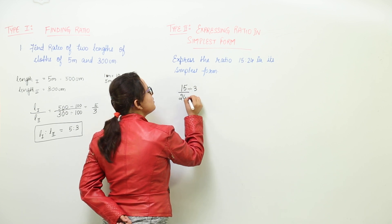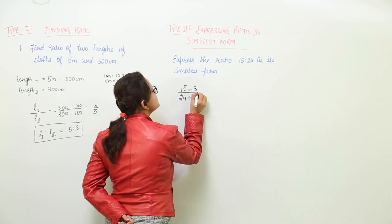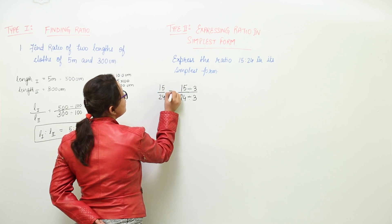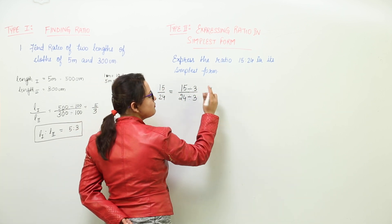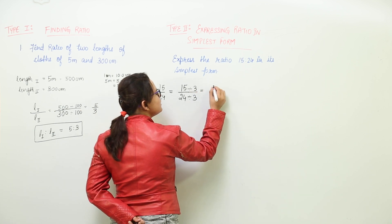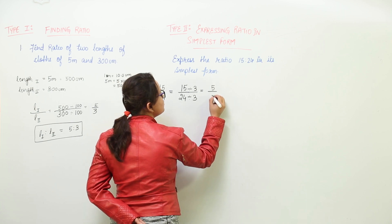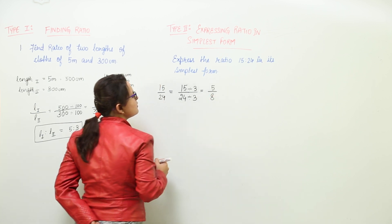So we are going to divide both with 3. I can write here that 15 upon 24 will be equal to, we can divide them with the same numbers. When you divide 15 with 3, you would get 5. And when you divide 24 with 3, you get 8.